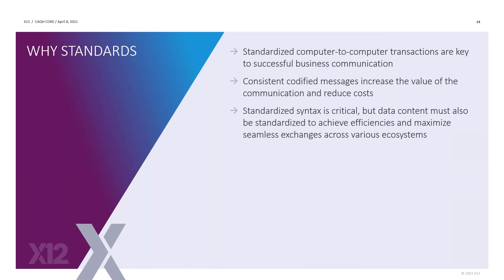In addition to computer-to-computer communication, it's the idea of codified messages. So A's and B's and C's can be translated easily because they're the same thing — an A is an A. If you have a text message, it's kind of hard to know what to do with it. You can't codify it and post it automatically to your system. Standard syntax and data content achieves efficiencies and maximum exchange across the ecosystem.